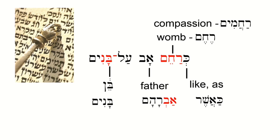I'm going to show you one more thing about banim — what happens when you put it into a word pair. In English we say the sons of Israel, but in Hebrew you say sons Israel. To show it's sons of Israel, it's in a word pair, and the im sound of the plural changes to ay, like benay Yisrael. So benay is banim, but the sound changes because it's a word pair: benay Yisrael.